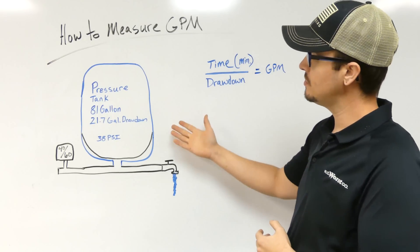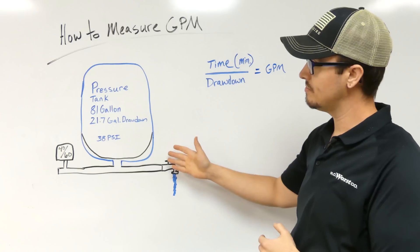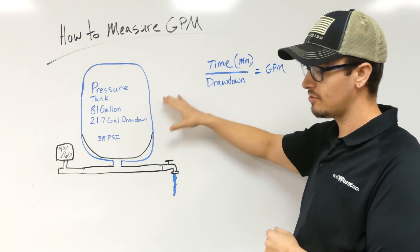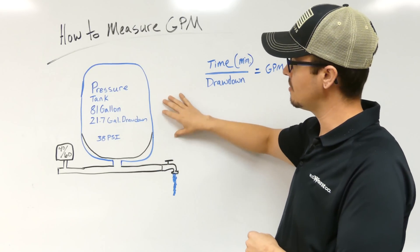In order to measure this, we're talking about a well system, so keep that in mind. You're going to need a pressure tank, so assume that you've got one of those if you're on a well system.